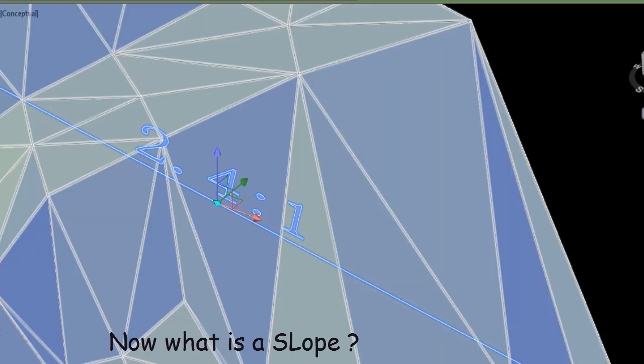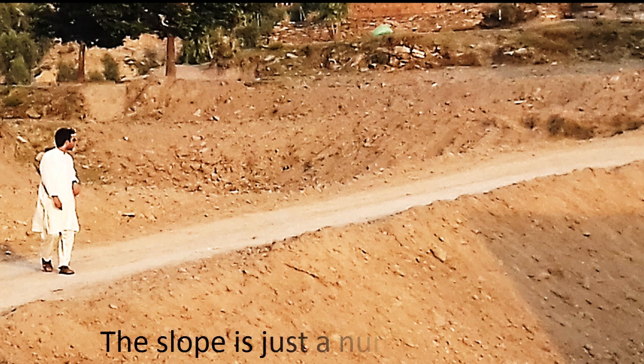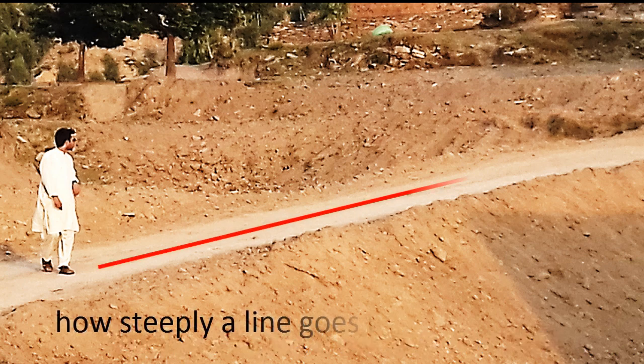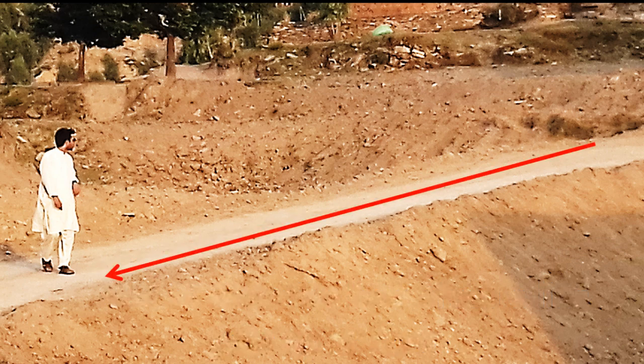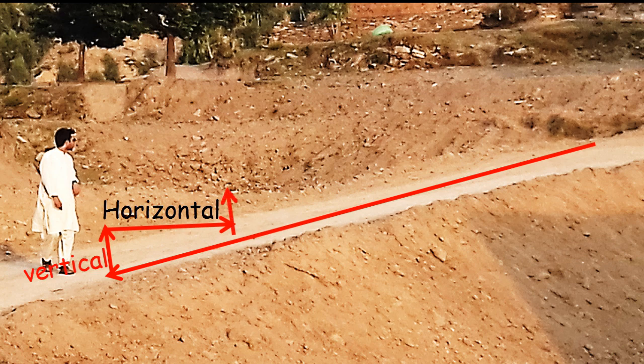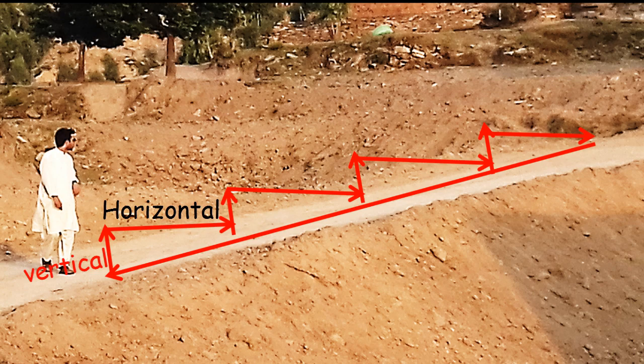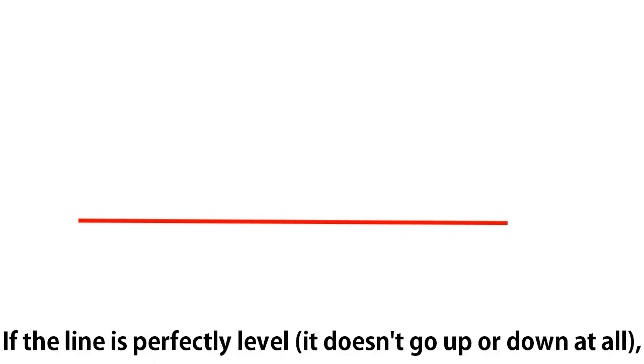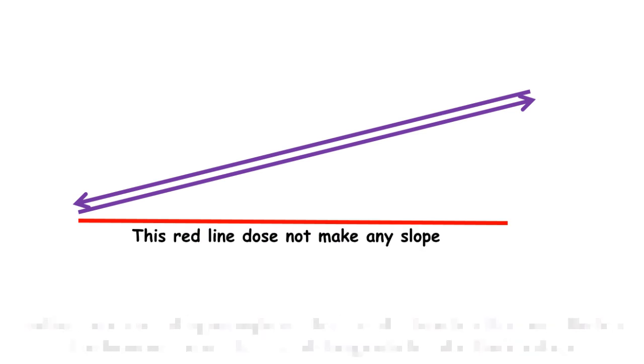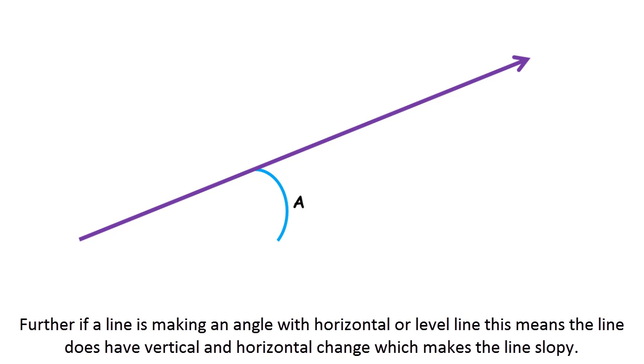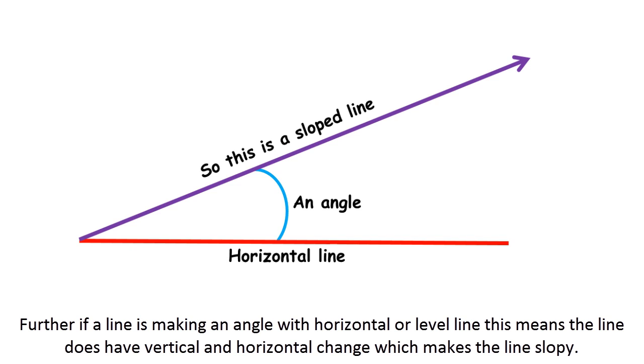Slope is a number that tells how steeply a line goes up or down. To describe steepness, we mention the vertical and horizontal change of a line. That's why slope is also known by the rise and run ratio, in which run is the horizontal distance and rise is the vertical distance. If the line is perfectly level, it does not go up and down at all, meaning the slope is zero. If a line makes an angle with the horizontal, it has vertical and horizontal change, making the line sloped.